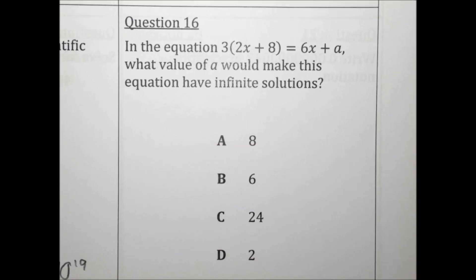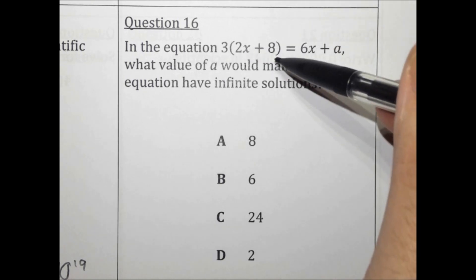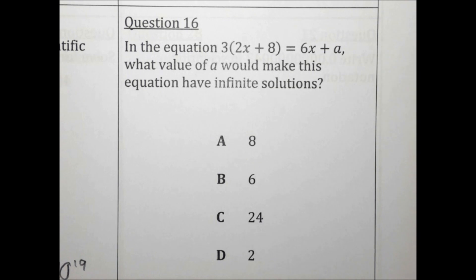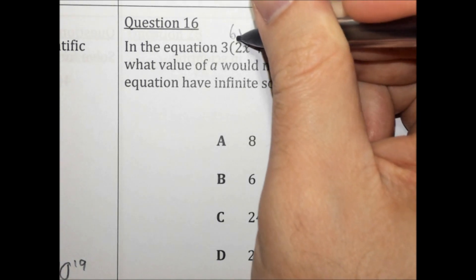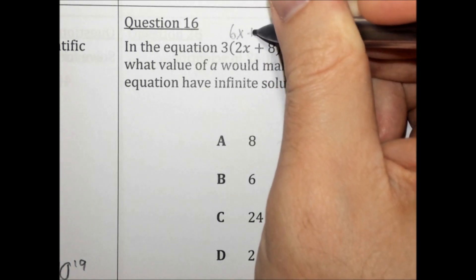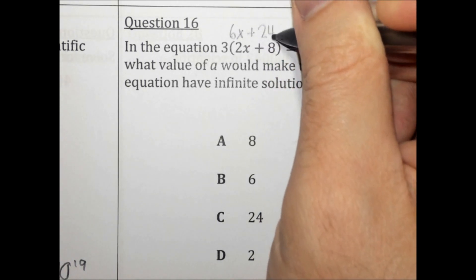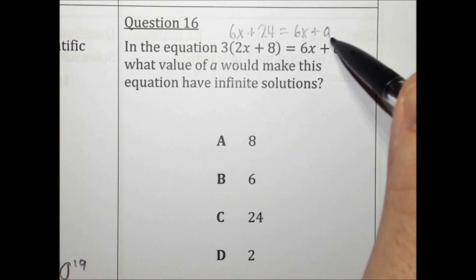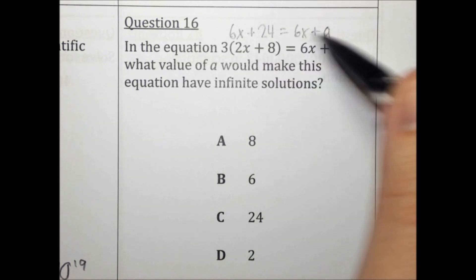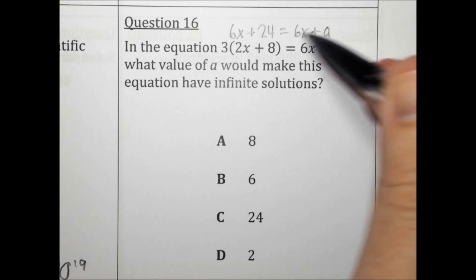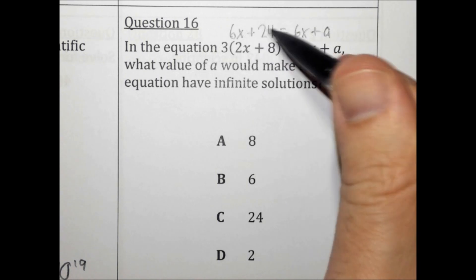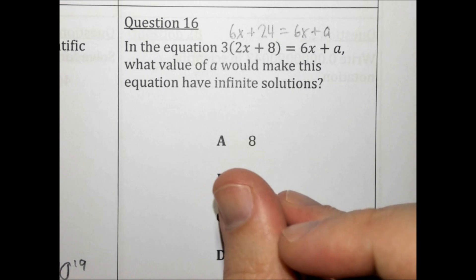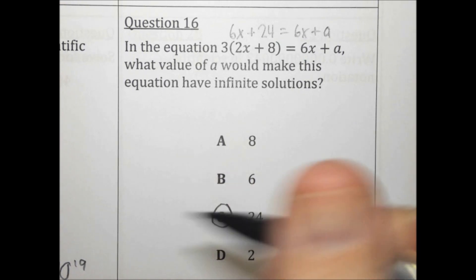In the equation, what value of A would make this equation have infinite solutions? For infinite solutions, the equation needs to be exactly the same on both sides. When we distribute, we get 6x plus 24 equals 6x plus A. For this to be the same on both sides, we need A to equal 24 — a positive 24, just like on the left. The answer is C.